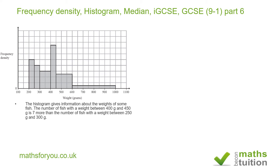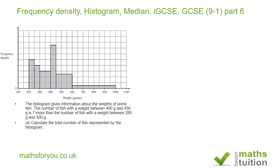The histogram gives information about the weights of some fish. The number of fish with a weight between 400 and 450 grams is seven more than the number of fish with the weight between 250 and 300 grams — so we're comparing this column here with this one here. It then says: calculate the total number of fish represented by the histogram.